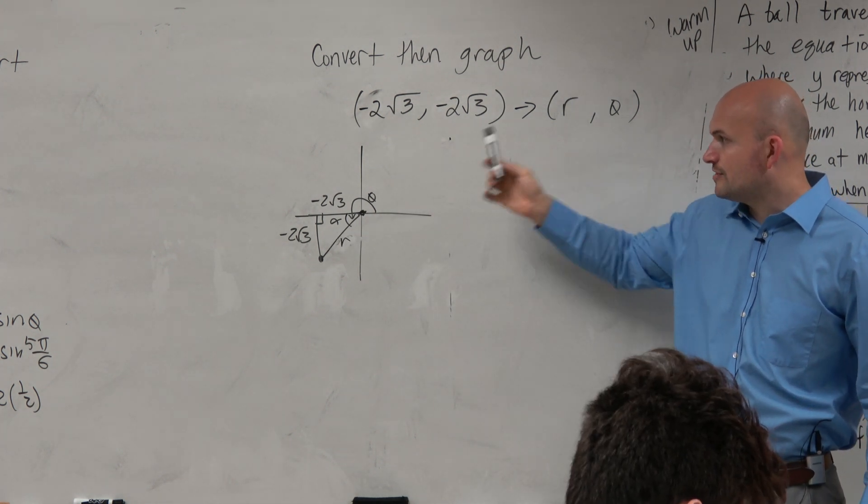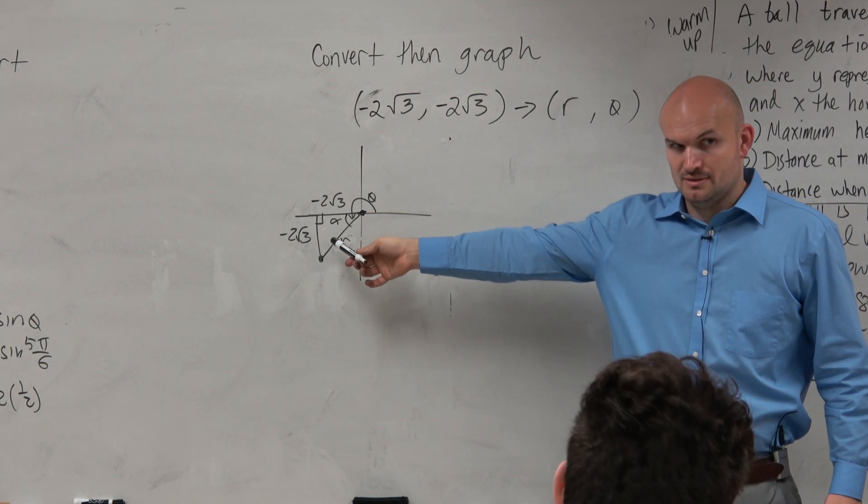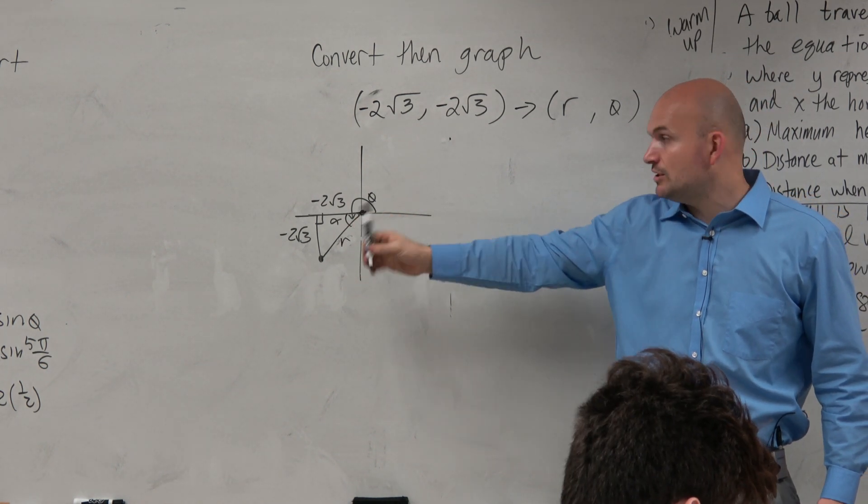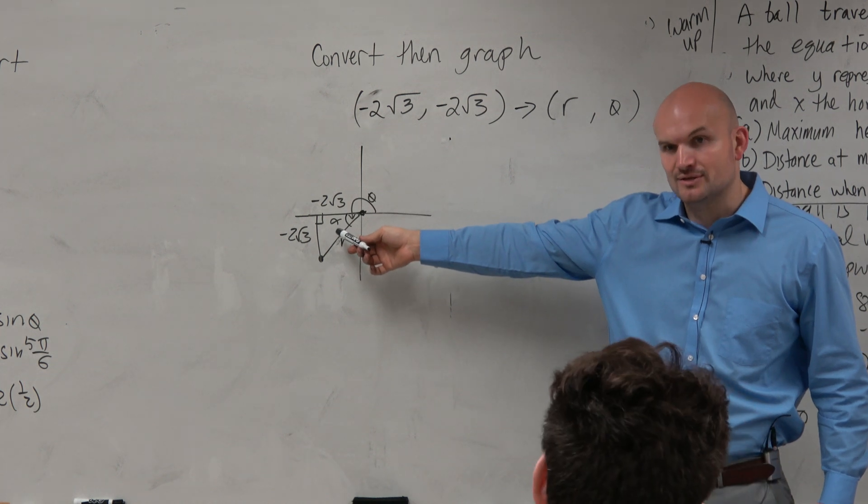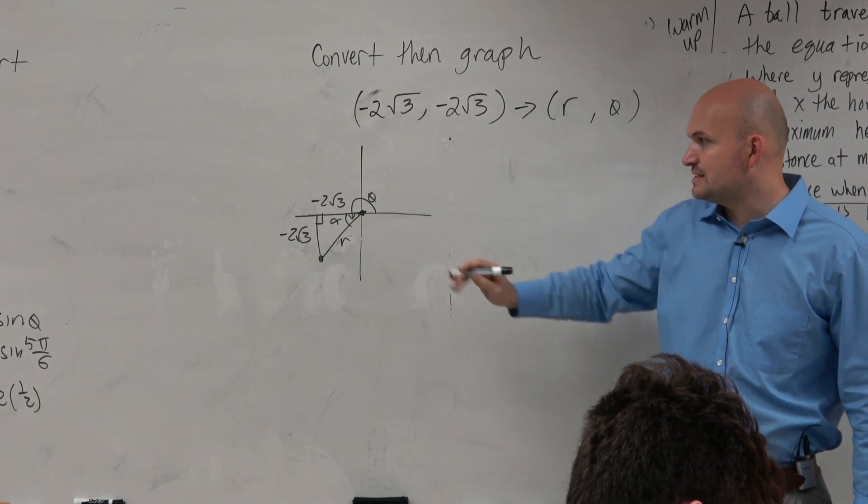Theta is the angle from standard form, from here to here. We don't know what that is. We can only figure out the angle inside the triangle, right? Now before we get to that, let's find r.